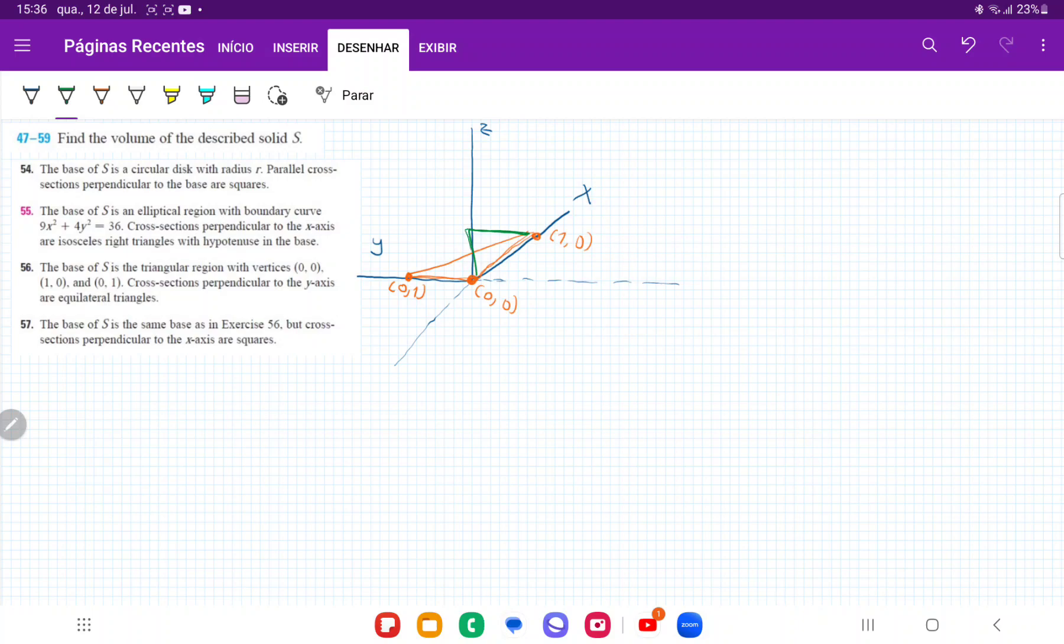So we're going to have these triangles that we are going to sum up. We're summing up these equilateral triangles from 0 all the way out to 1 on the y-axis. So this volume is going to be the integral from 0 to 1 of A(y) dy. So we're summing up these areas of these triangles as a function of y.